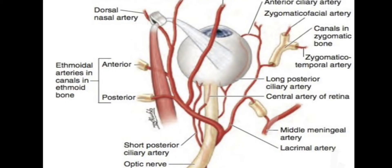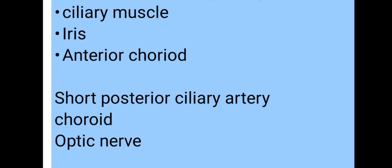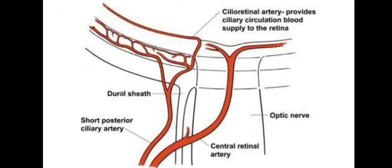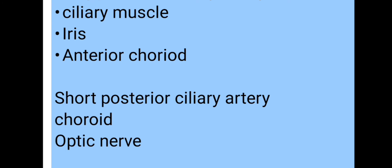The posterior ciliary arteries consist of the long posterior ciliary arteries and the short posterior ciliary arteries. The long posterior ciliary arteries are two in number and supply the ciliary muscle, iris, and the anterior part of the choroid. The short posterior ciliary arteries are around 15 to 20 in number and supply the choroid and the optic nerve head, where they form the ring of Zinn around the optic nerve together with the pial arteries.